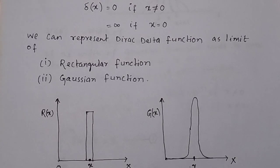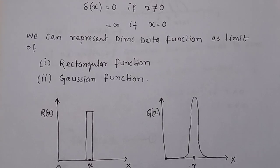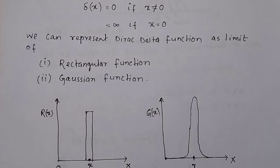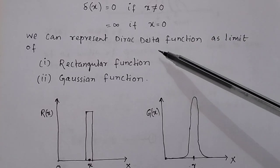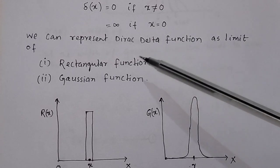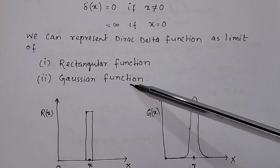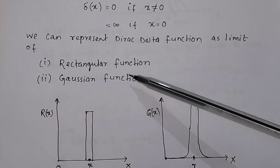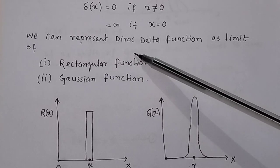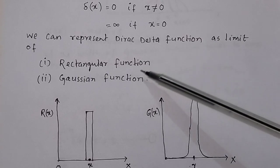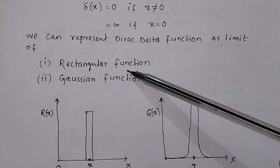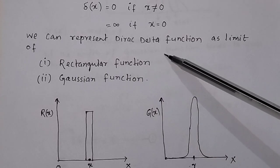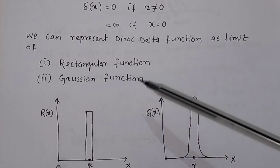We use the Dirac delta function in cases where the y-value of the function is very large when the x-value is very small. We can represent the Dirac delta function as the limit of a rectangular function or as the limit of a Gaussian function.